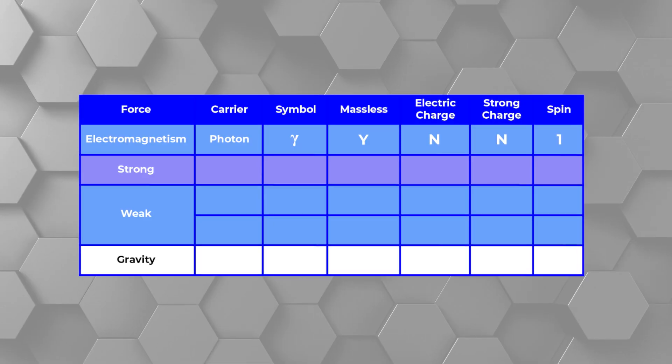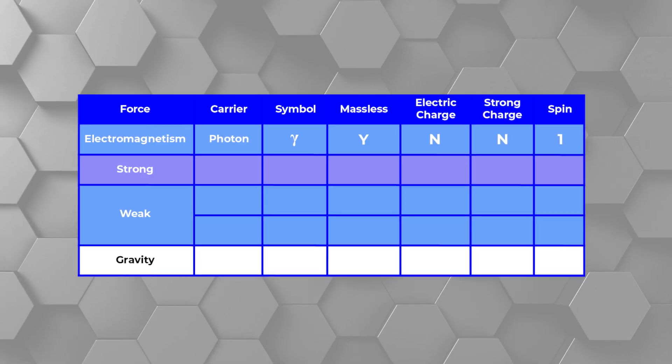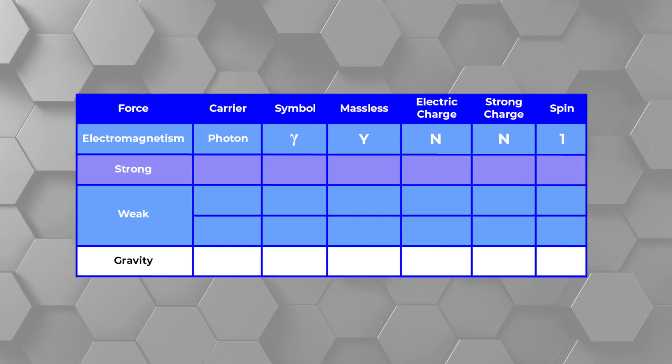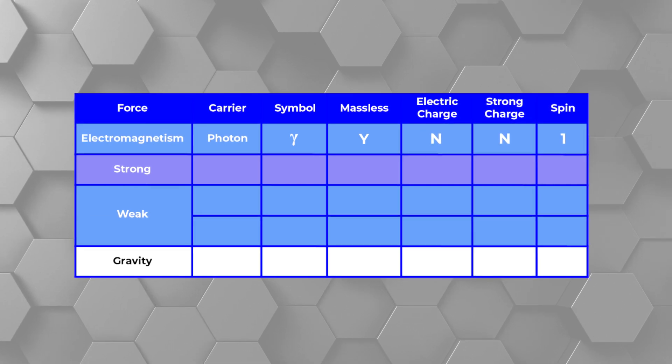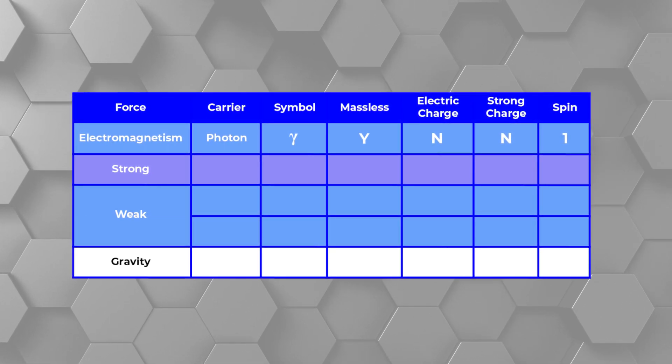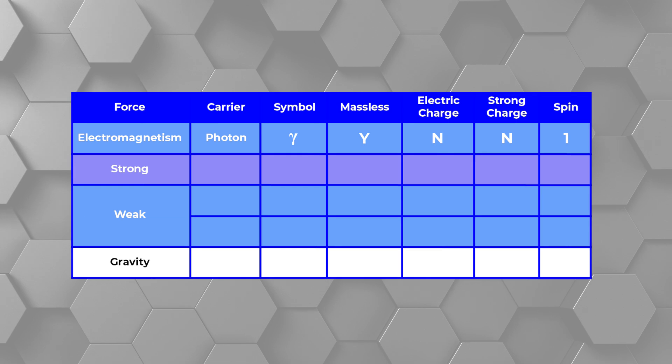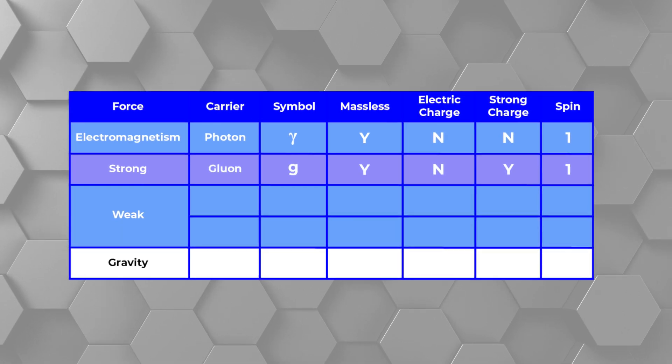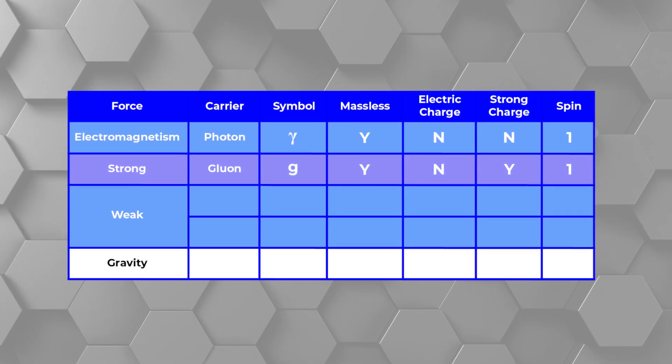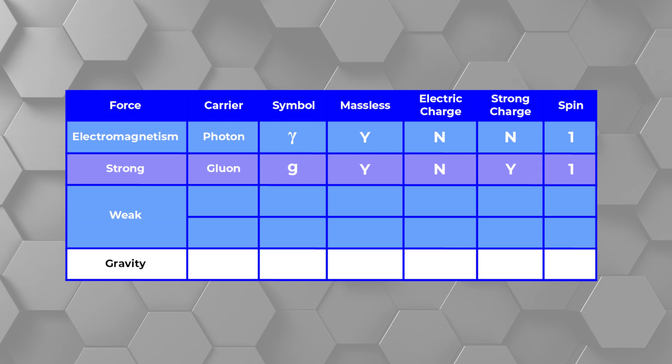While we don't know what a theory of quantum gravity entails, we do know a few things. For instance, we know some of the characteristics of the quantum carrier of gravity. In electromagnetism, it's the photon — a massless particle with no electrical or strong charge and a spin of one. In the strong force, it's the gluon, which is a massless particle with no electrical charge and a spin of one.